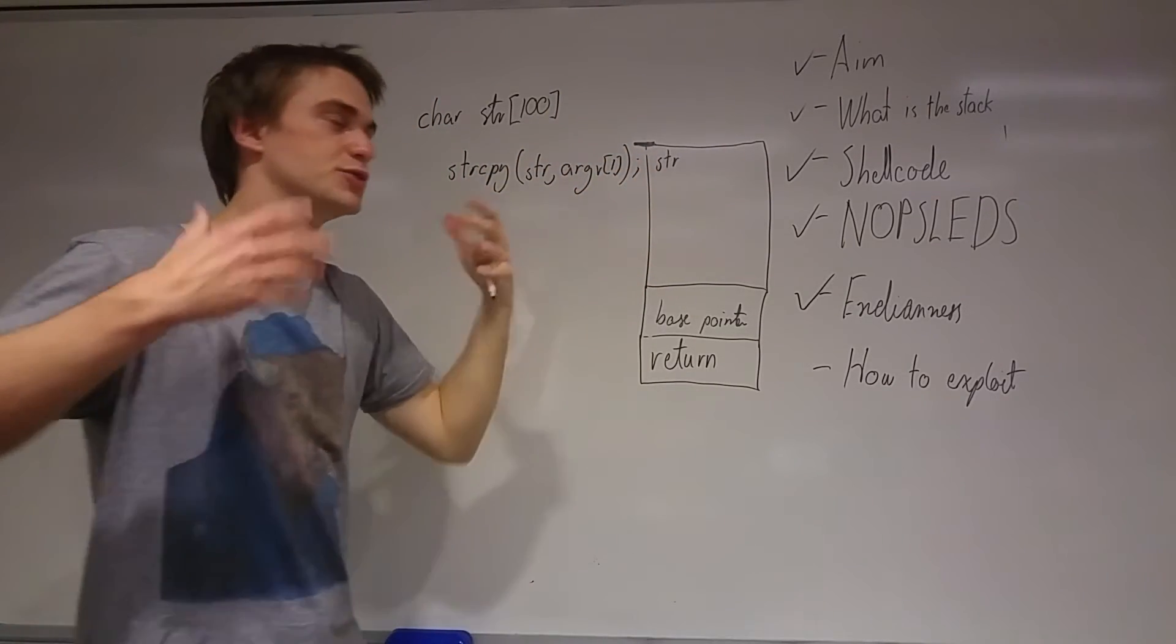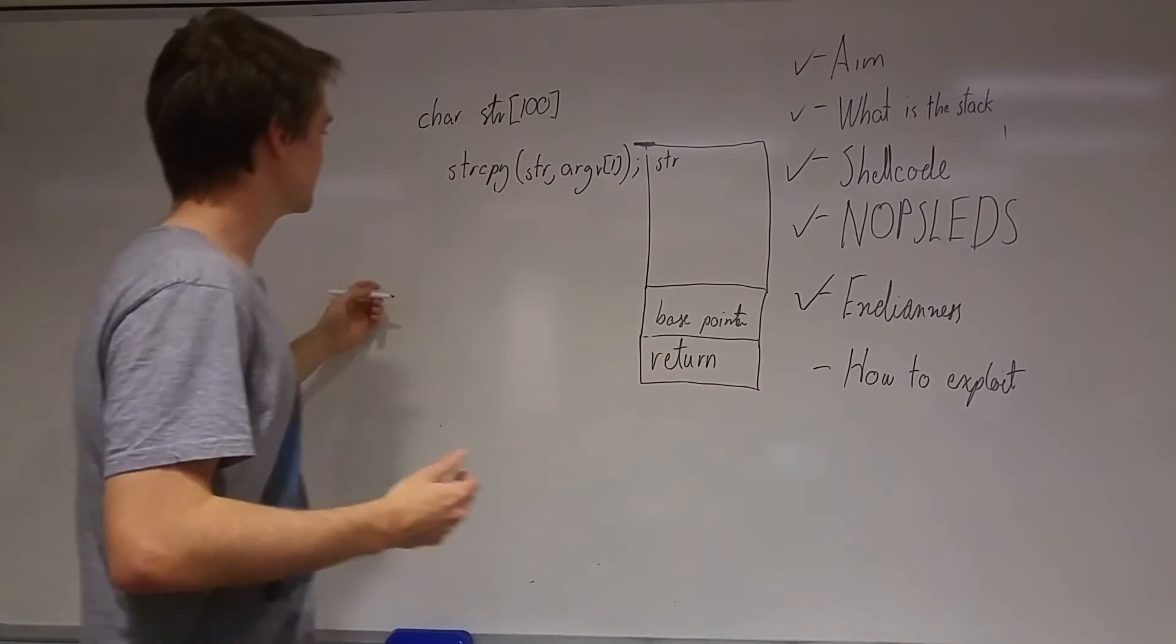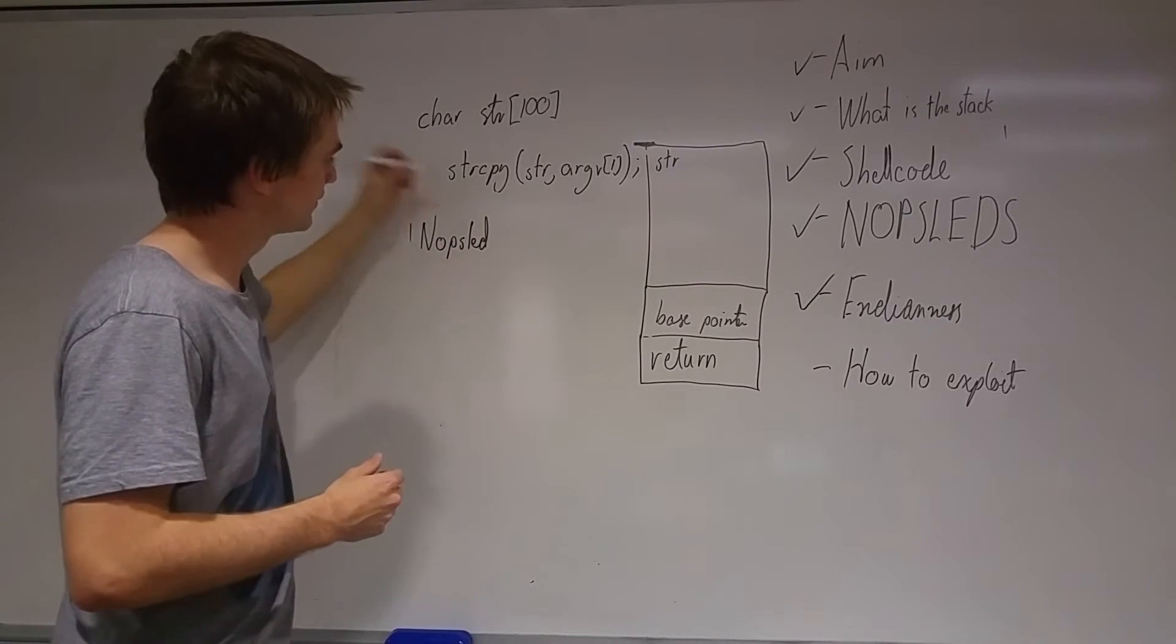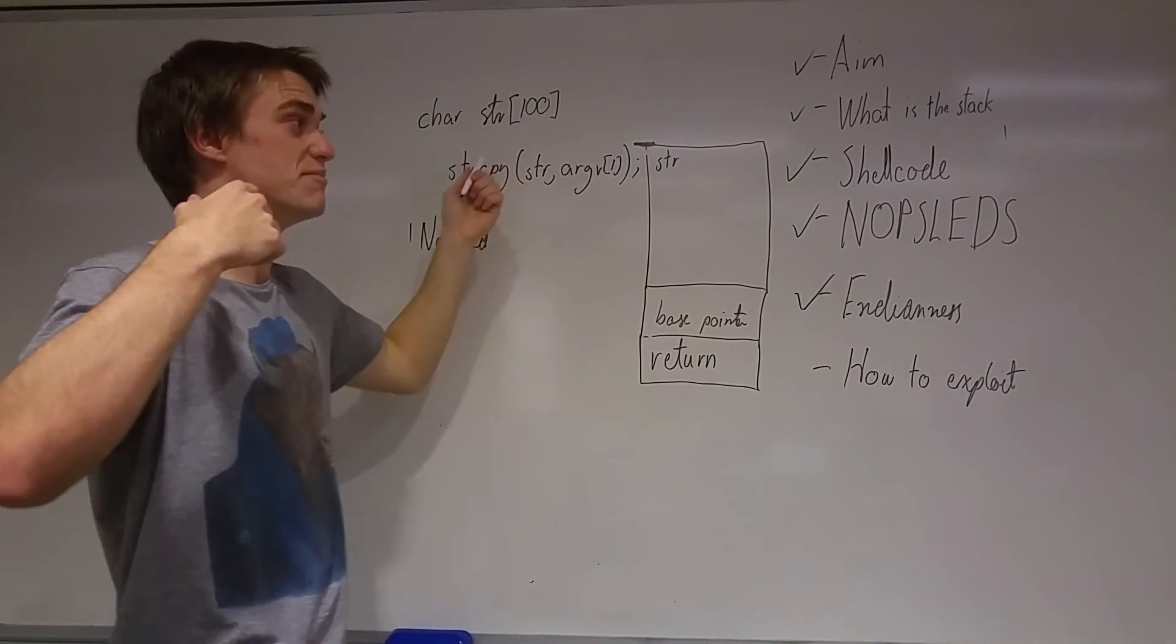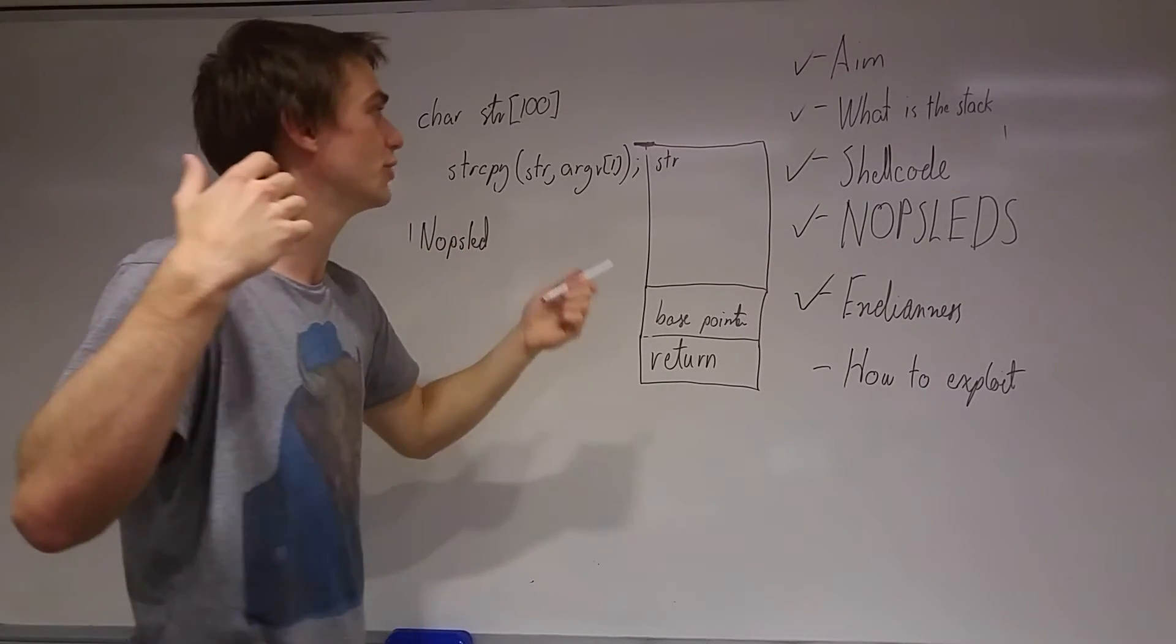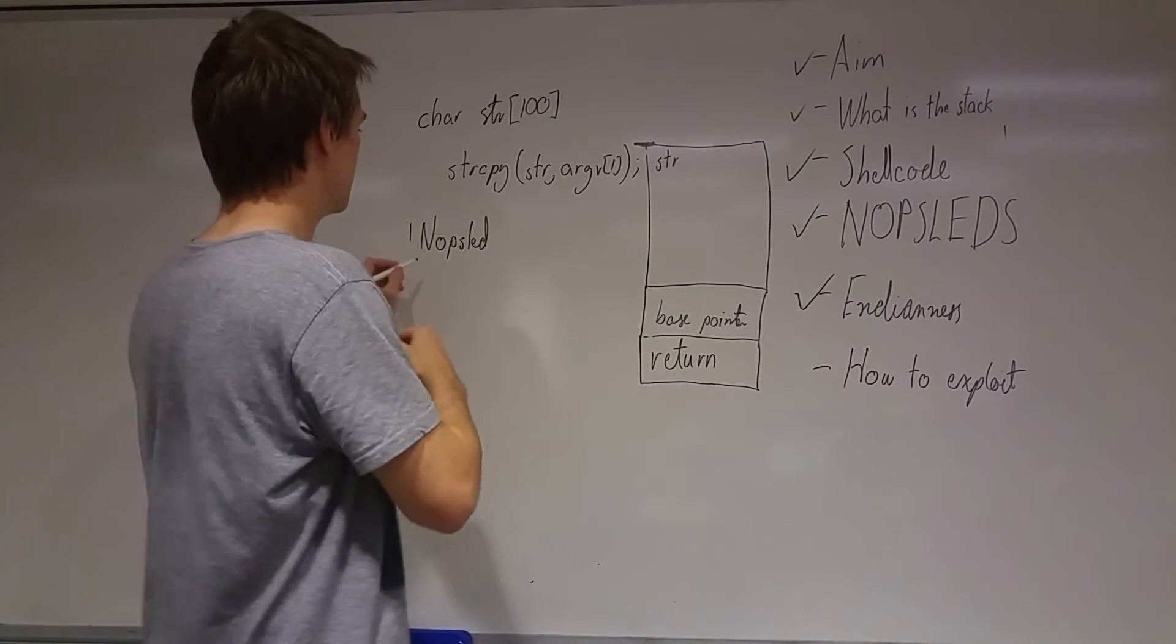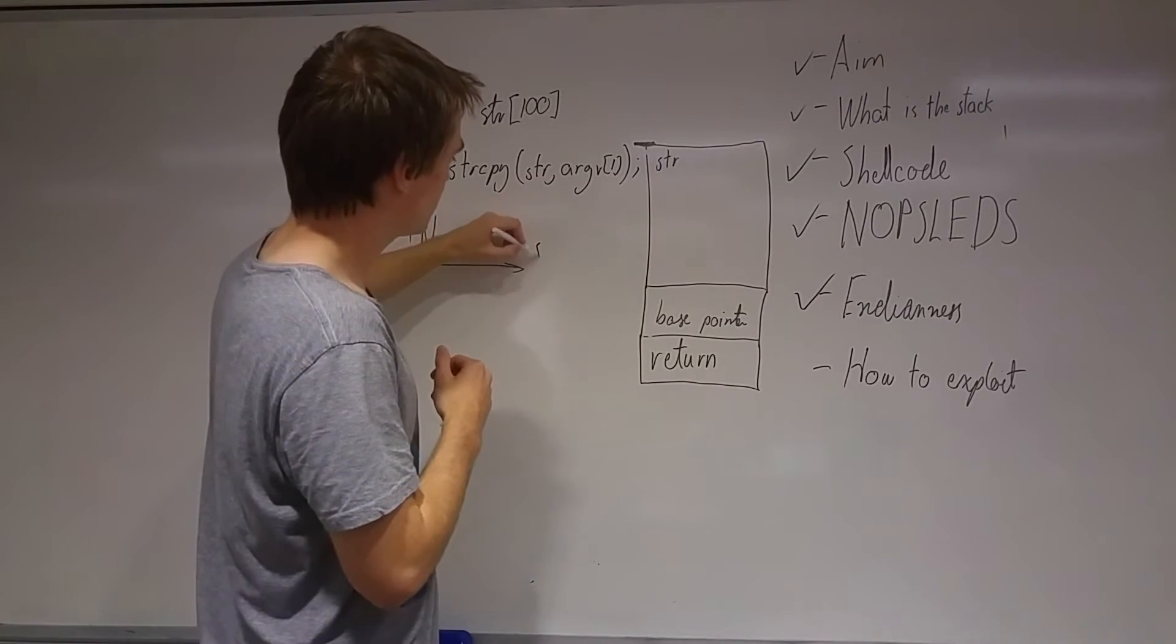Inside here is where we put what we call our payload. Our payload is this: it is a nop sled which is as long as we can make it. For example, if this is a 10 megabyte buffer, we're going to put 10 megabytes minus, for example, 50 bytes of shellcode. The idea is nop sleds can actually be huge and that's all good. This is going to be as long as it can be, and we're going to have our little bit of shellcode.